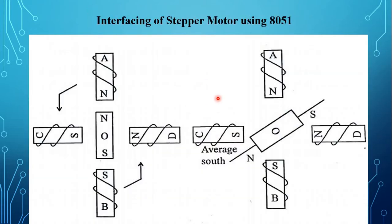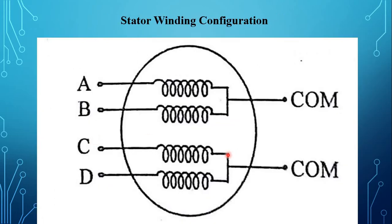The next topic is interfacing of stepper motor using the AT51 microcontroller. A stepper motor is a widely used device that translates electrical pulses into mechanical movements. In applications such as disk drives, dot matrix printers, and robotics, the stepper motor is used for position control. Stepper motors commonly have a permanent magnet rotor called a shaft surrounded by a stator. The most common stepper motor has four windings paired with center-tapped common terminals.